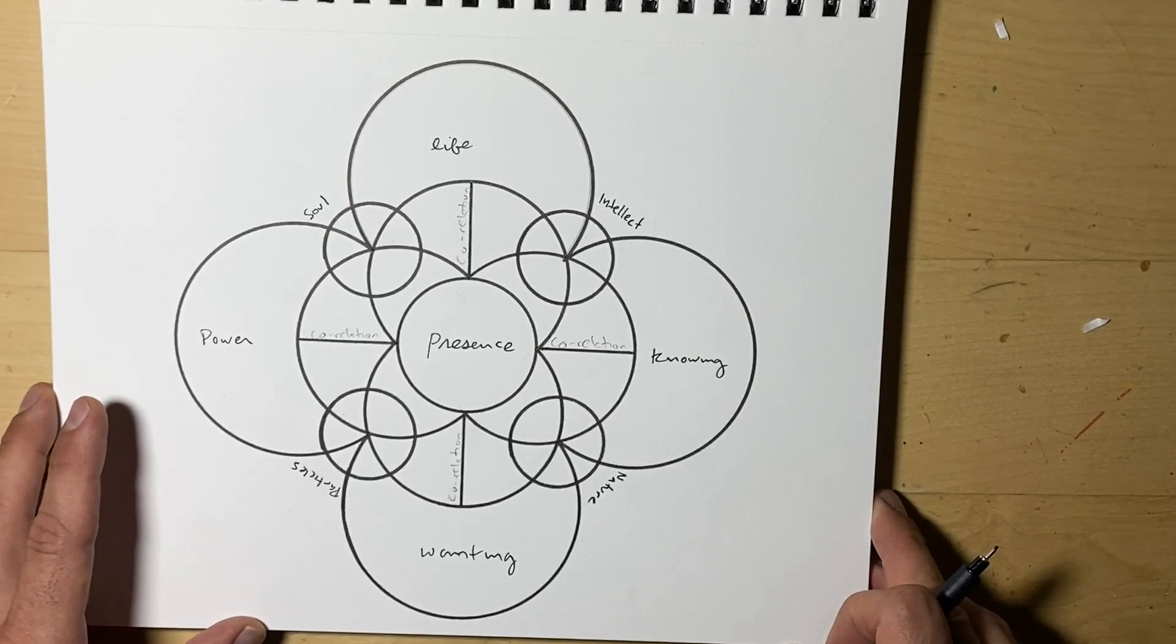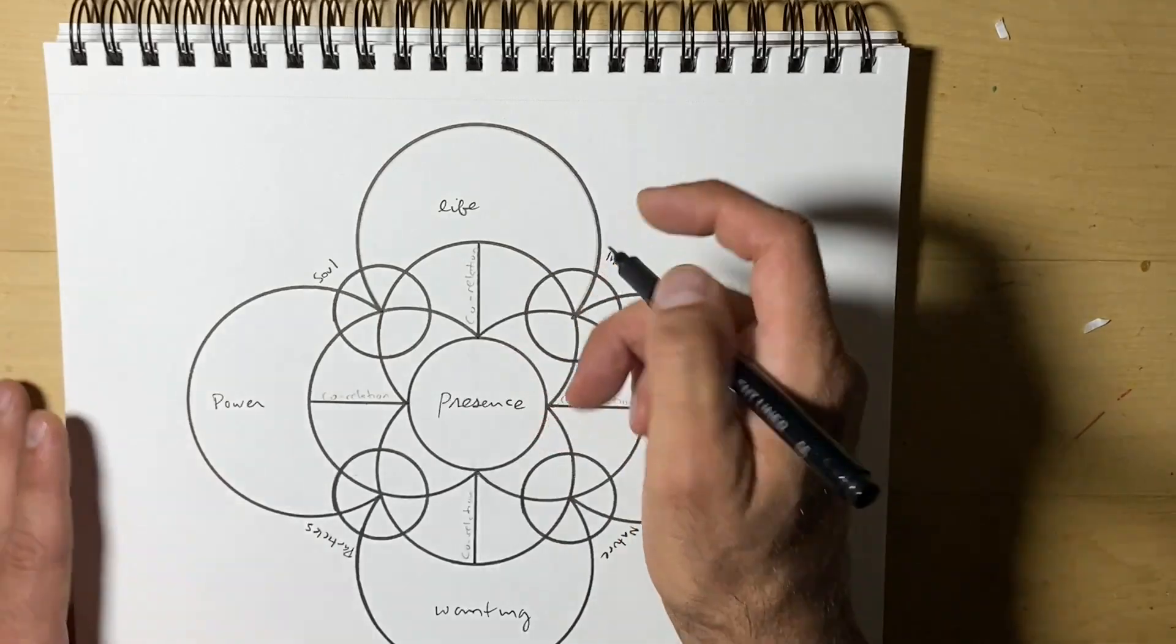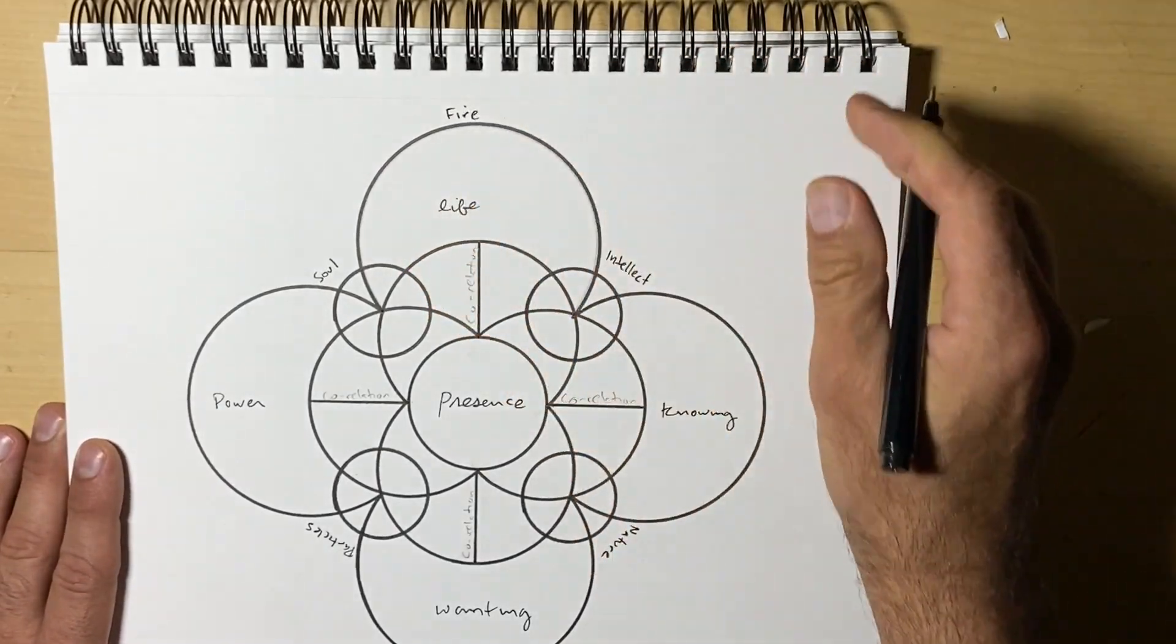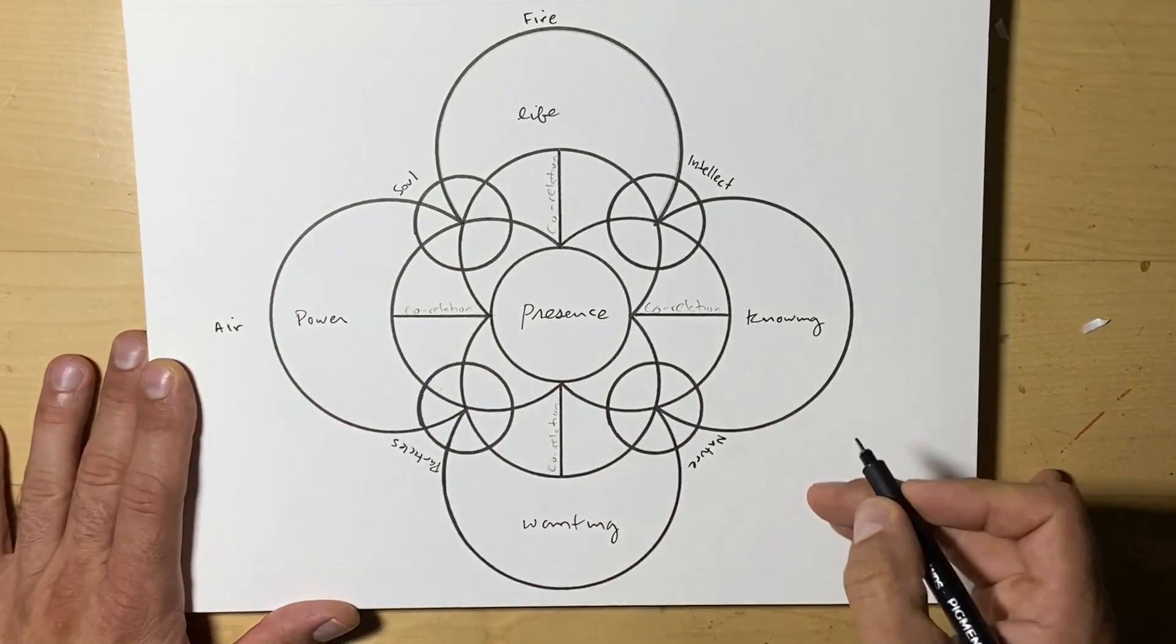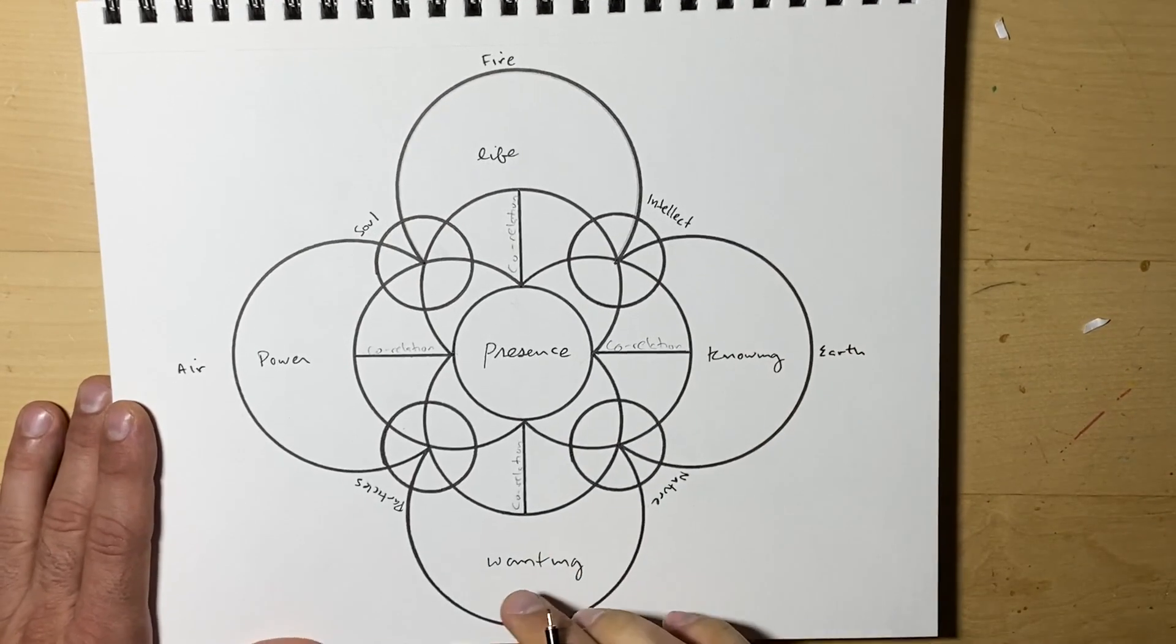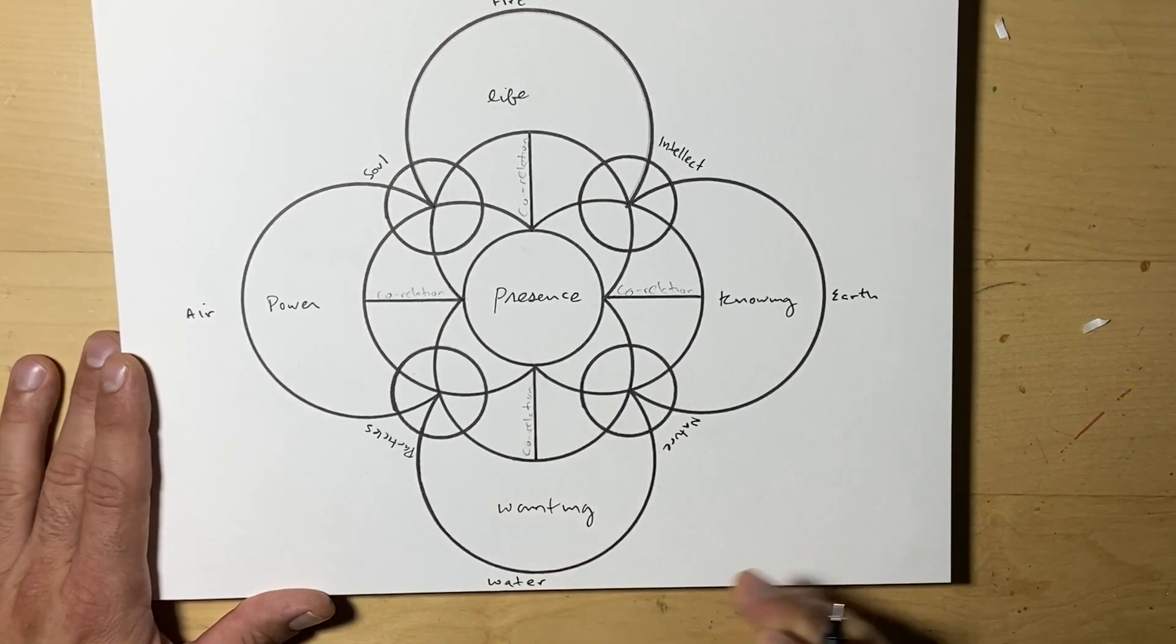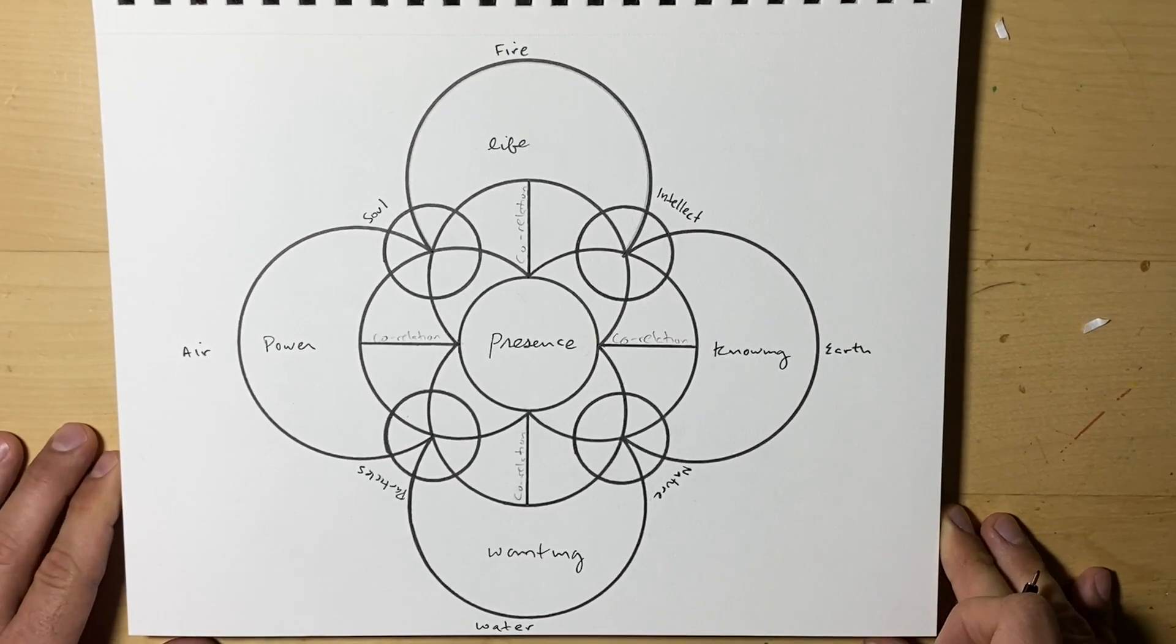Then we have on the outer edges of the circles, on top we have the fire. On the left side we have air. On the right side we have earth or dirt. And on the bottom we have water, which are the four elements. Even can be described as the platonic elements.